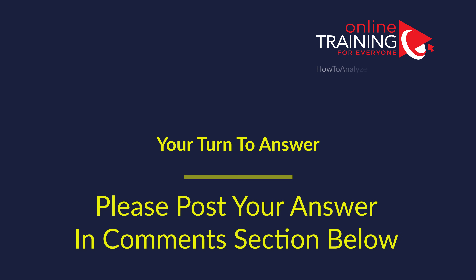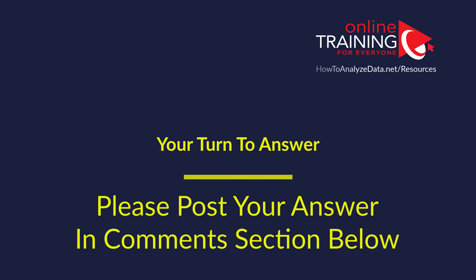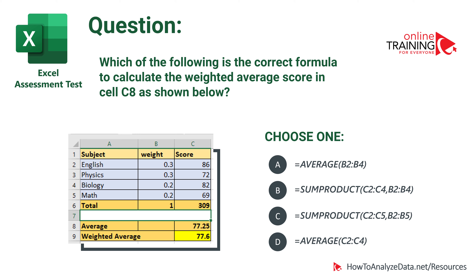Now it's your turn. Please post your answer in the comment section below so I can give you a grade. Here's the question: which of the following is the correct formula to calculate the weighted average score in cell C8? Choice A uses the AVERAGE formula. Choice B uses SUMPRODUCT with one set of arguments. Choice C also uses SUMPRODUCT but with a different set of arguments. Choice D uses the AVERAGE formula as well. Which one is correct?